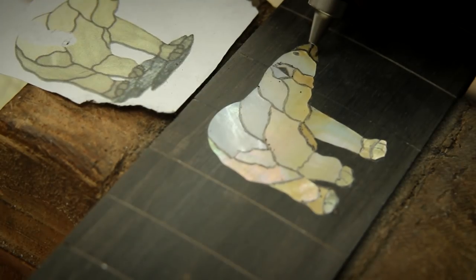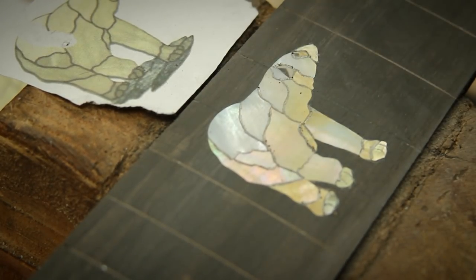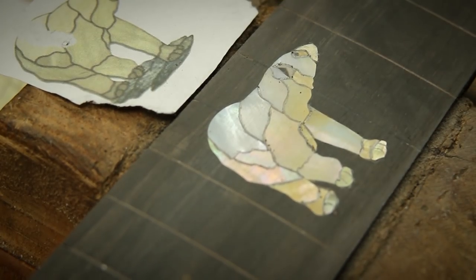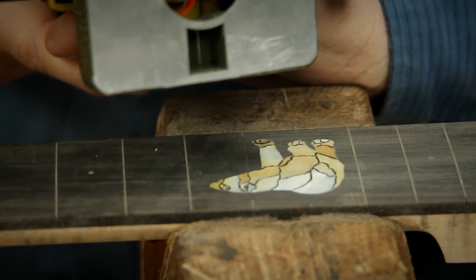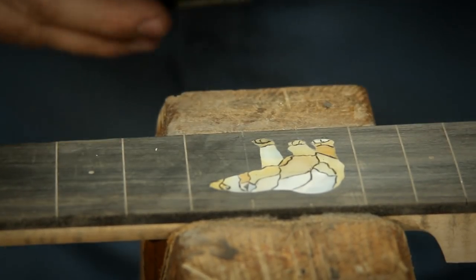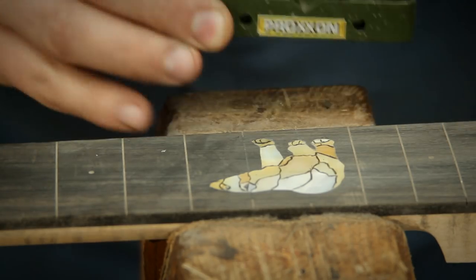And it means I need to get engraving really, which is another job with the Proxxon with a small dental burr, I suppose. I have a sub one mil, so it's probably a three-quarter of a mil dental burr in here. This is now just freehanding, which is quite scary.